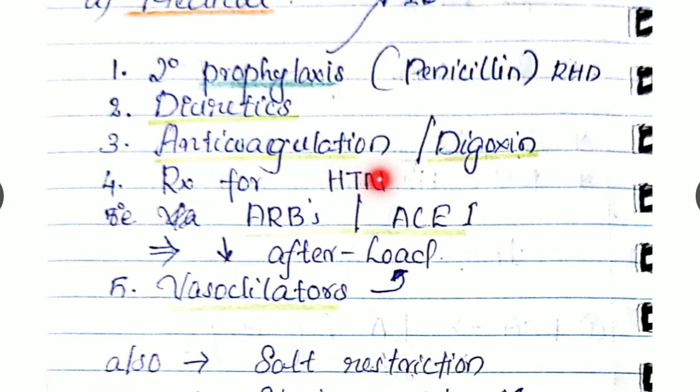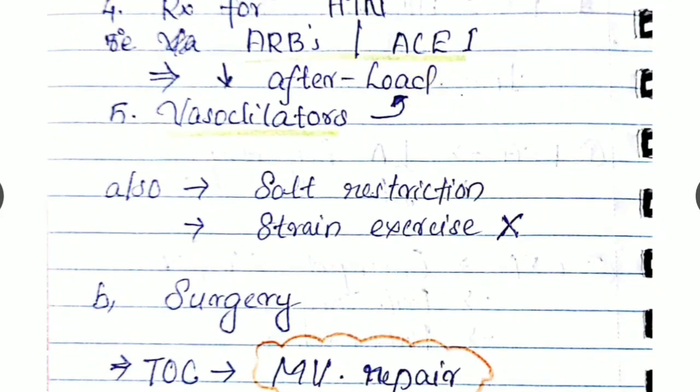As you know, secondary MR causes include hypertension. If the patient is hypertensive, we have to control by reducing the afterload with ARBs, ACE inhibitors, and vasodilators. That being the medical management. Also, we have to advise the patient for salt restriction, avoiding strenuous exercises.